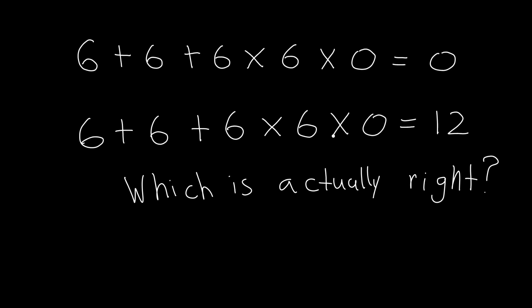At first glance, most people just go from left to right. This is 6 plus 6 is 12 plus 6 is 18 times 6 is 108. Then times 0 is 0. Not right, not wrong.